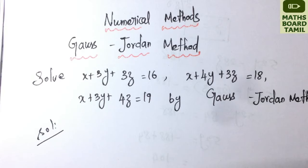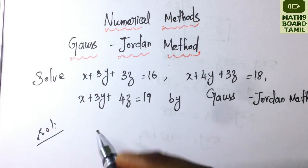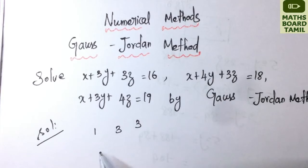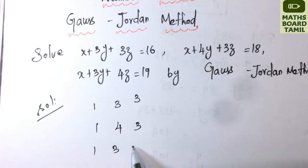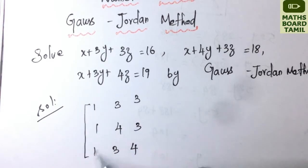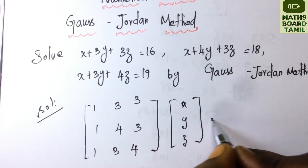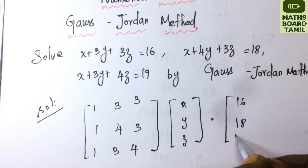We will proceed with the Gauss-Jordan Method, moving from the upper triangular matrix to the diagonal matrix format. The A matrix is: 1, 3, 3 | 1, 4, 3 | 1, 3, 4. The X, Y, Z variables equal the B matrix: 16, 18, 19.